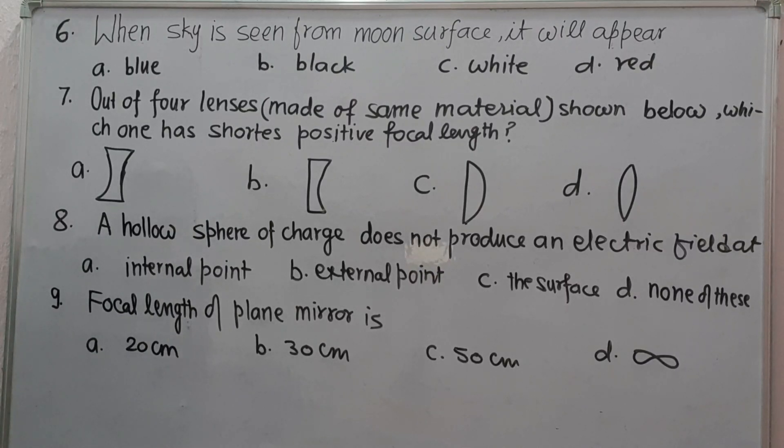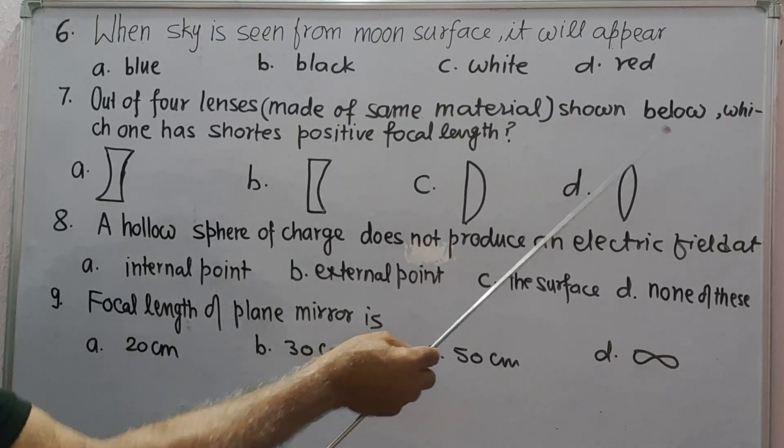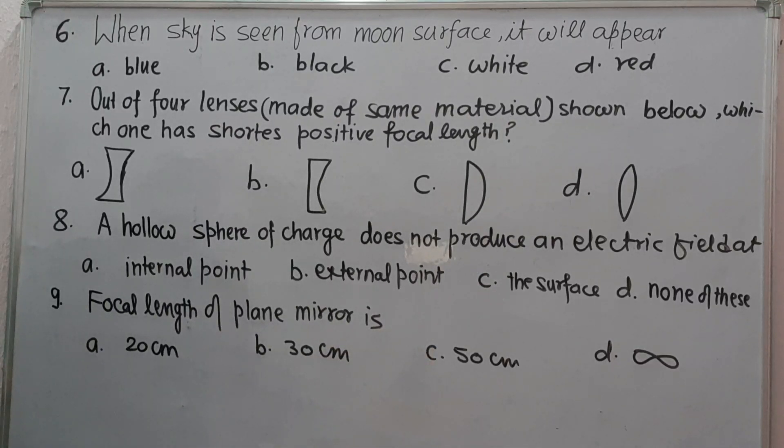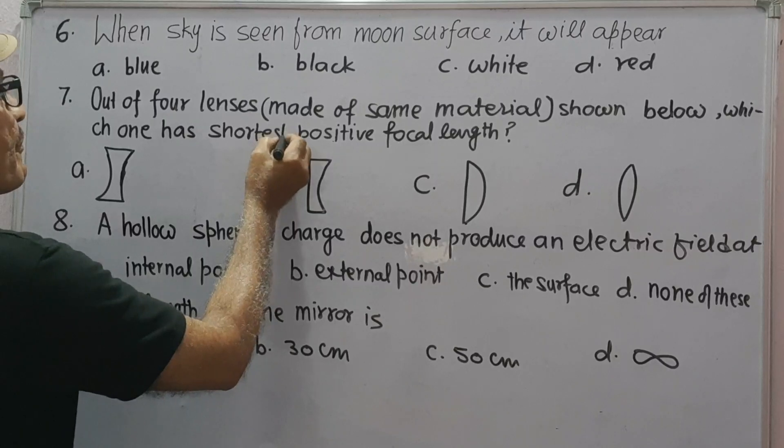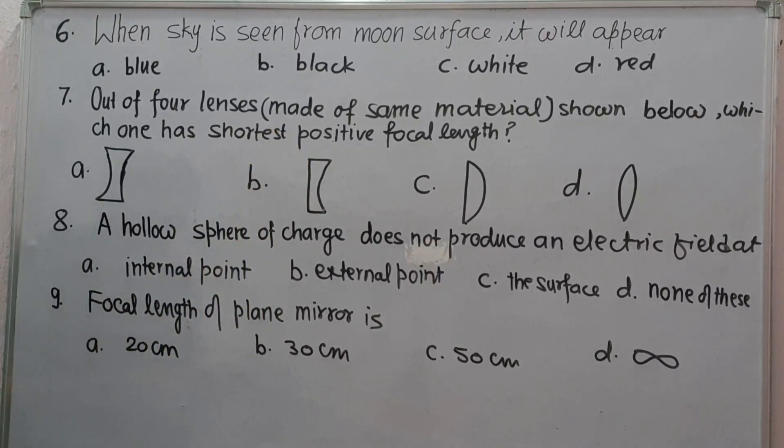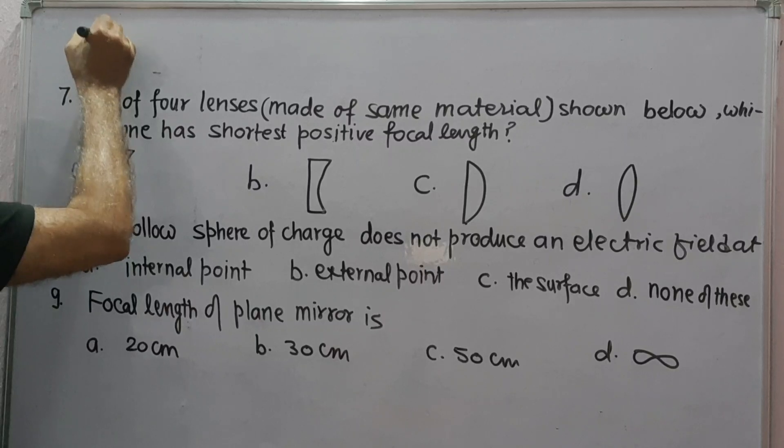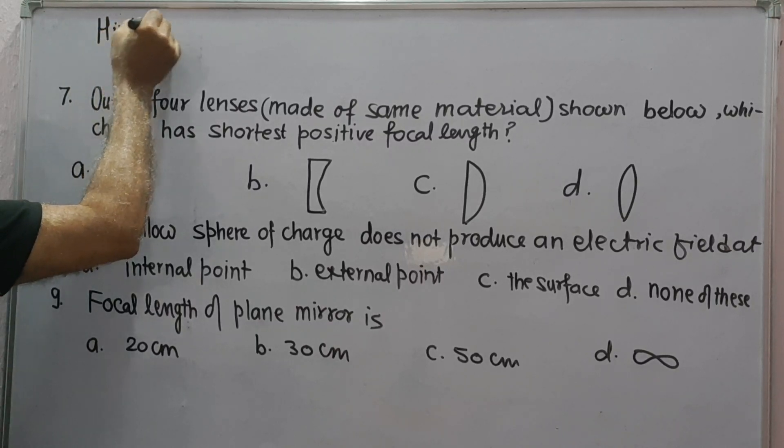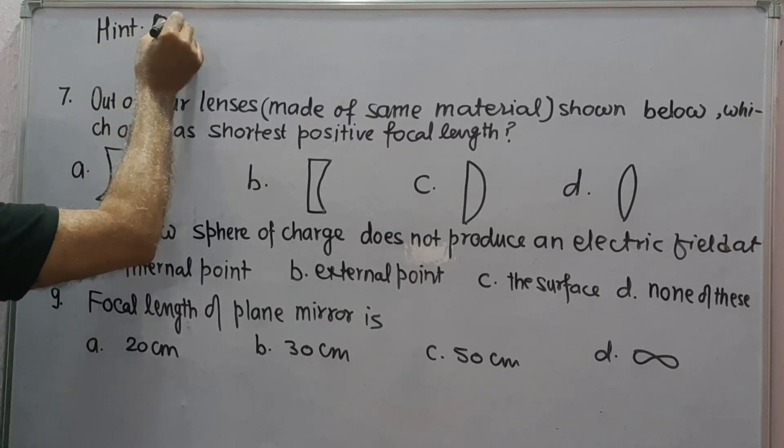Question number 7: out of 4 lenses made of the same material shown below, which one has shortest positive focal length? Answer for question 7.